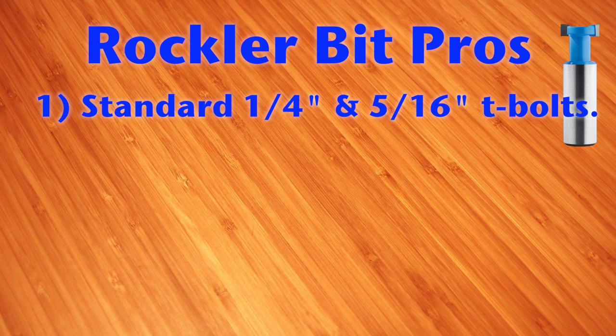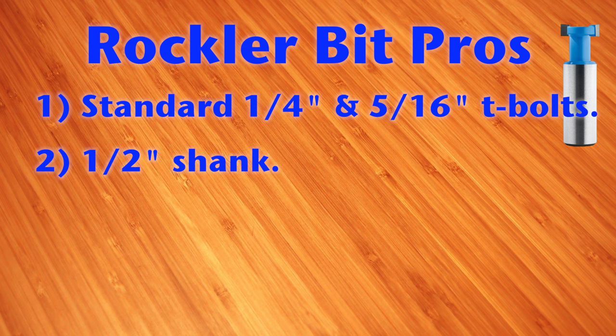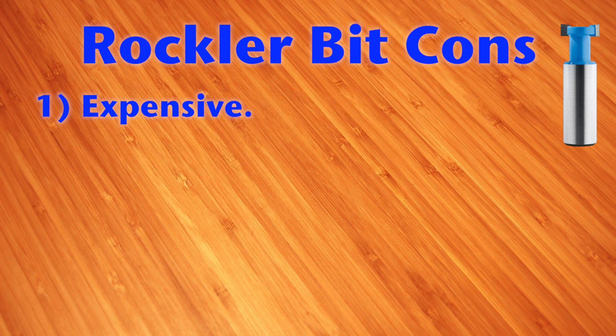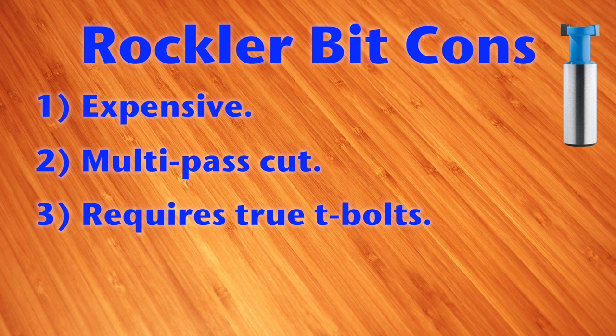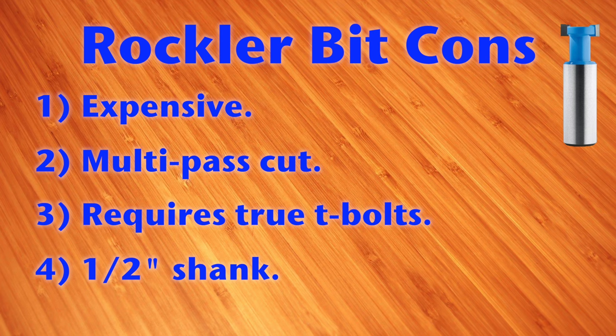The Rockler bit cuts slots that work with standard quarter inch and five sixteenths inch T-bolts. And if you prefer half inch shanks, you're in luck. But it's expensive. It requires multiple passes to cut the slot and a second bit. It only works with true T-bolts. Bolts larger than a quarter inch may work also. And if your router can't accept half inch shanks, you're out of luck.